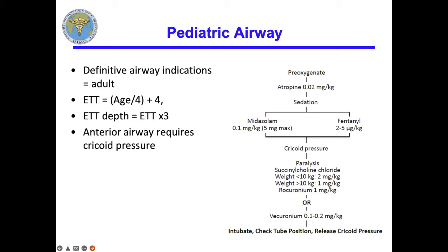Definitive airway indications are the same as adults: GCS less than 8, or any concern about potential loss of airway. If you don't have a Broselow tape, ET tube size is age over 4 plus 4, and ET tube depth is ET tube size times 3. Get someone to hold cricoid pressure. A shoulder roll to straighten the neck helps with intubating kids. Be conscious of the C-collar. In the US, use fiberoptic intubation or a GlideScope if available, but if you need the shoulder roll to straighten the airway, airway comes first.